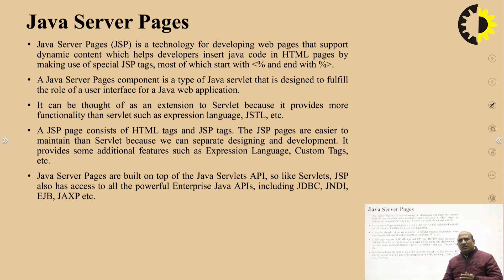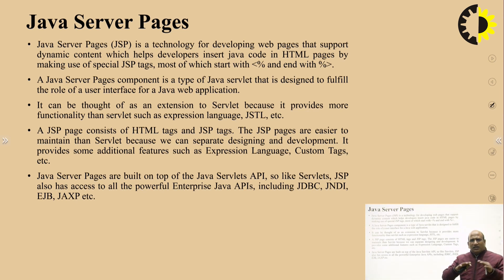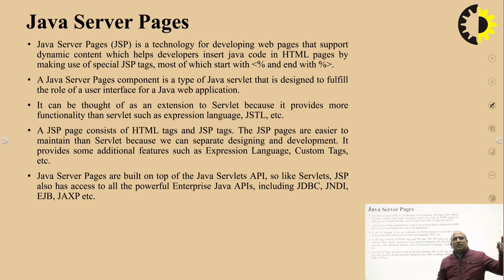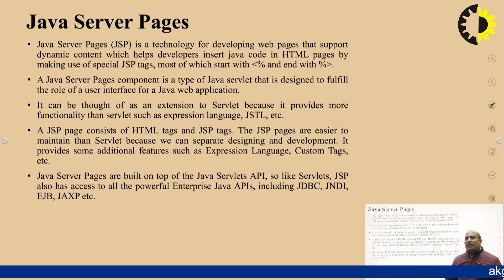HTML along with Java in a single page makes that page dynamic — this is called a JSP page. We have static content in our HTML page, and wherever dynamic things are required we use Java in that same HTML page to fetch the dynamic content. We can collectively say that Java Server Pages is a collection of HTML and Java. The parts that are static are handled through HTML, and the parts that are dynamic are handled through Java — collectively that page is called a JSP page.